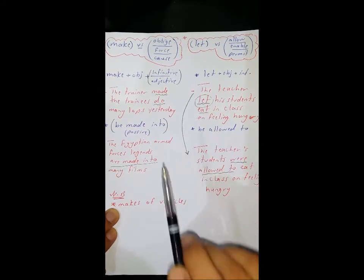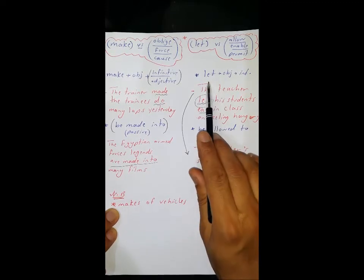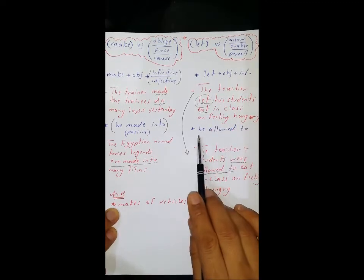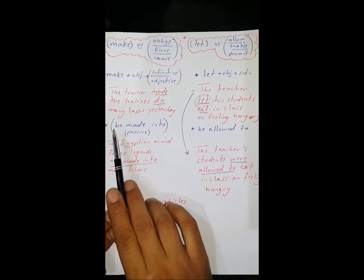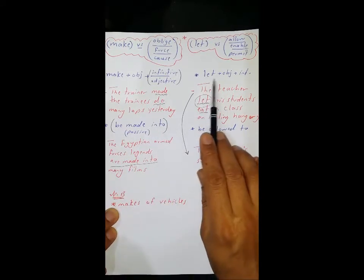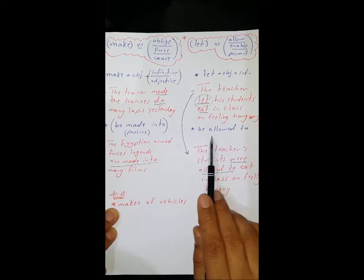But if I want to change this sentence into passive, I am supposed to change let plus object plus infinitive to be allowed to. Unlike make, I simply say be made into, but here, let object infinitive changes to be allowed to.